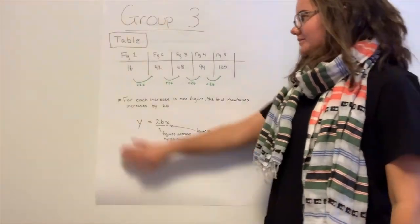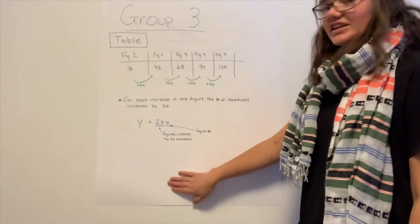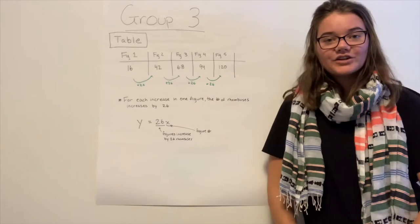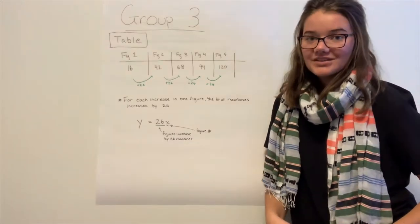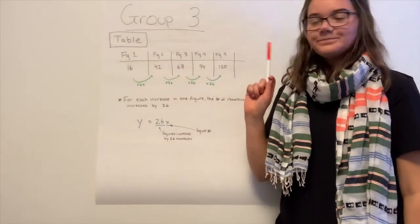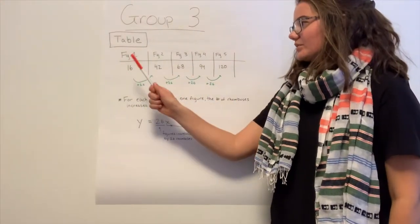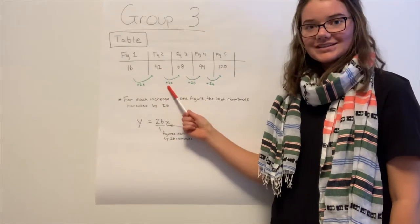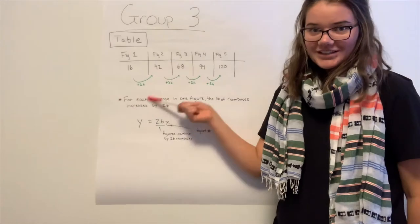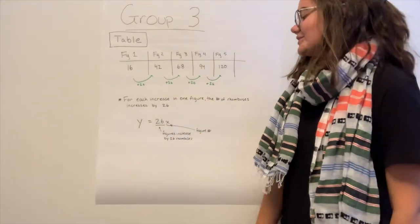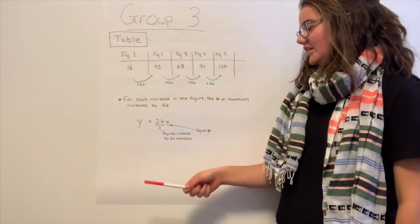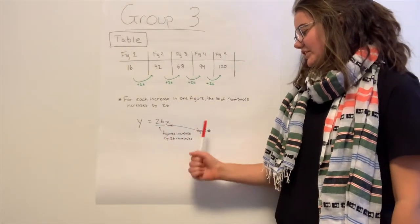Let's start with group three, and the reason I chose this one first is because I do notice an error, and I just want to address that. What I would foresee a student in this group saying out loud is, so we noticed when we drew out the figures that they were increasing by 26 every single time, and so we know that when we do repeated addition that we have to multiply, and so we decided to come up with this generalization, 26x, where figures increase by 26 for each figure number.